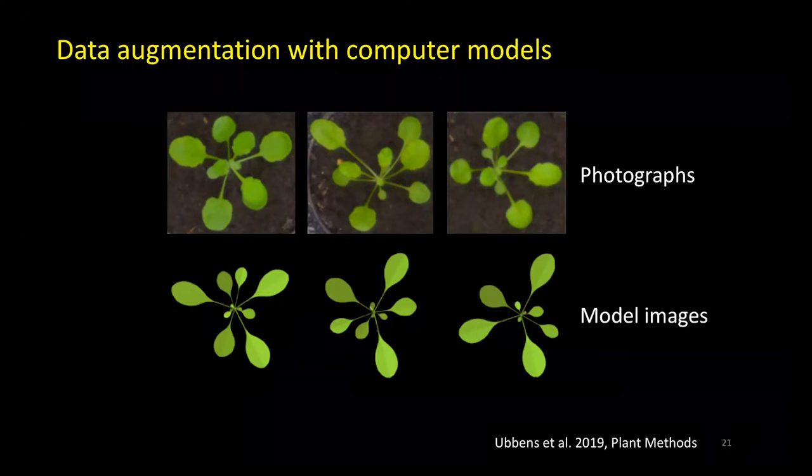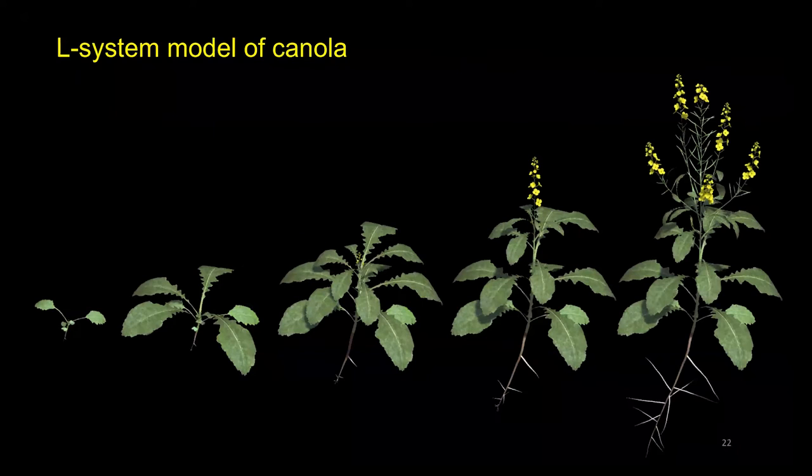Now we want to apply the same idea to canola. So we constructed a developmental L-system-based computer model that simulates growth of a plant from seeding to rosette, bolting, flowering, and podding stages. The image sequence shown here is of a synthetic plant that was constructed on the basis of descriptions available in the literature, including from the Canola Council of Canada, and also discussions with canola breeders like Sally Vail from Ag Canada.